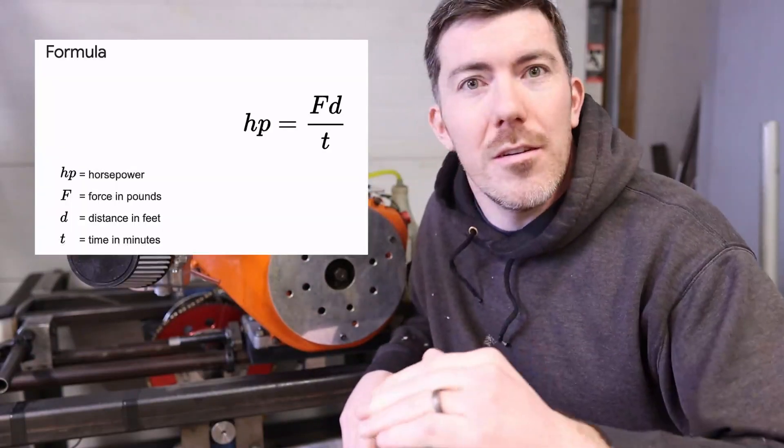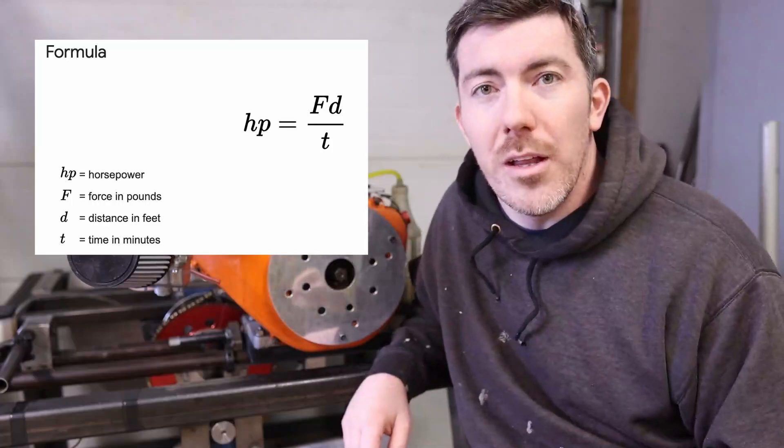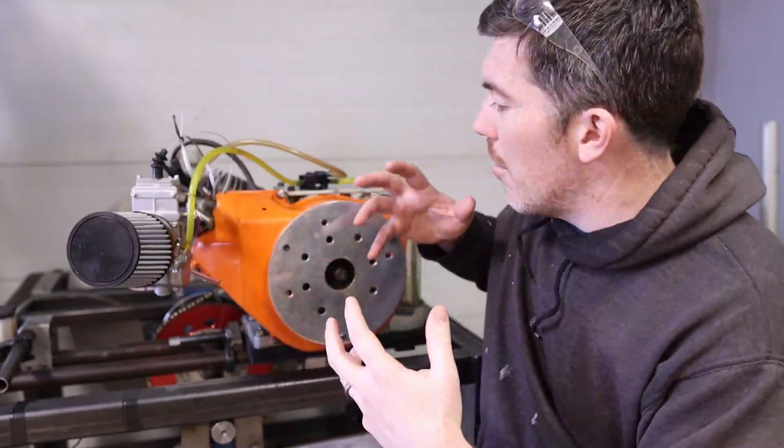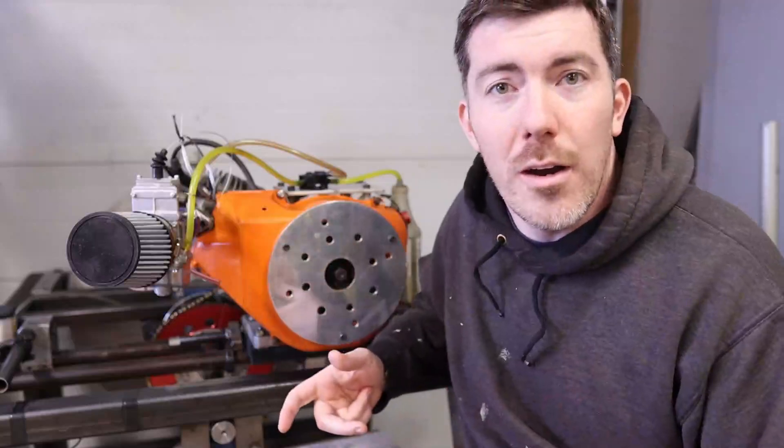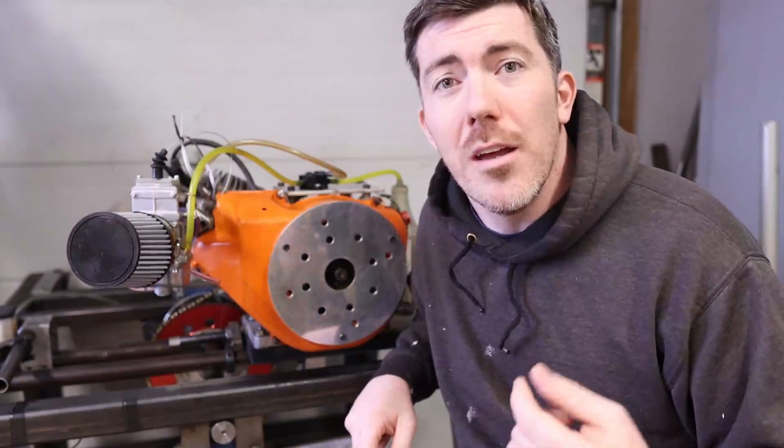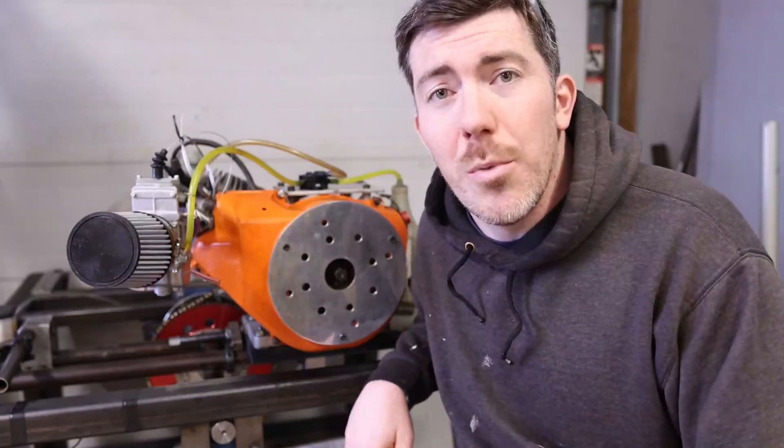Horsepower is simply force times distance divided by time. You can see the formula here. We're taking that formula and building it into a machine, acquiring data. When we run this engine, we know how well it is performing based on all of those different inputs.